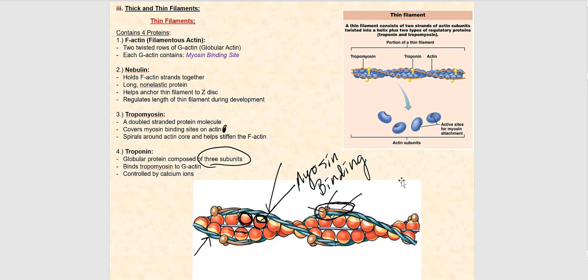You'll see how calcium comes into play and how important it is leading up to muscle contraction. Before we leave this picture, I just want to point out nebulin — right over there — which is what keeps the two strands of F-actin together.